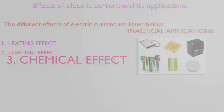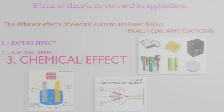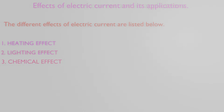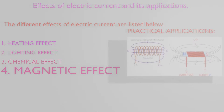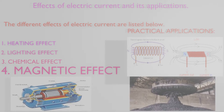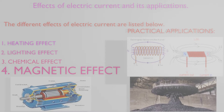Practical applications of the chemical effect: batteries, electroplating, electric coating, etc., work on this effect. Number four: magnetic effect. When an electric current passes through a wire, the needle of a magnetic compass deflects — this is known as the magnetic effect of electric current. Practical applications: electromagnets, motors, lifting magnets, etc., work on this effect.